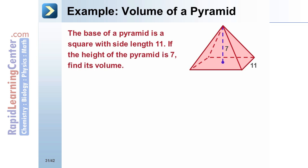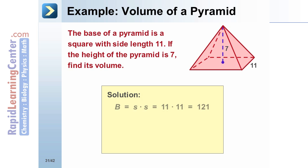The base of a pyramid is a square with side length 11. If the height of the pyramid is 7, find its volume. Substitute the needed values into the formula for the area of a square: B equals 11 times 11.